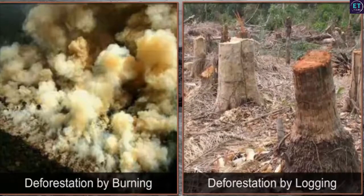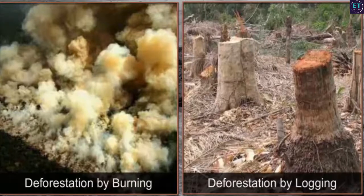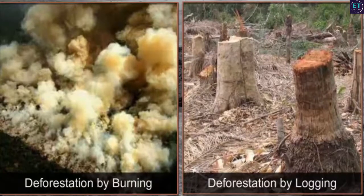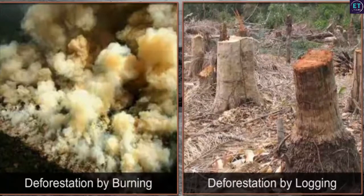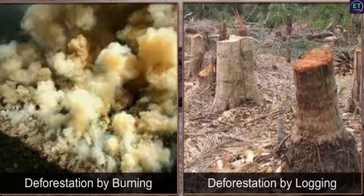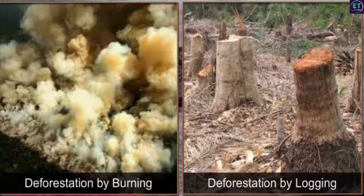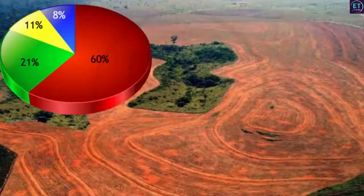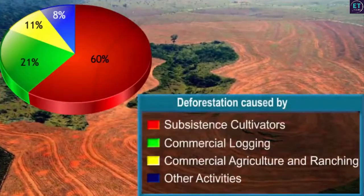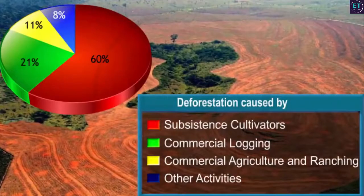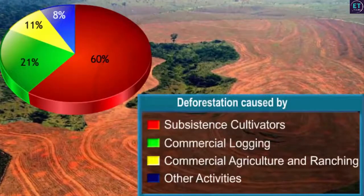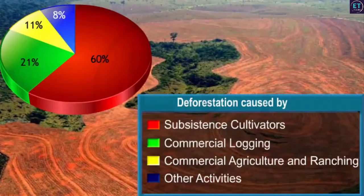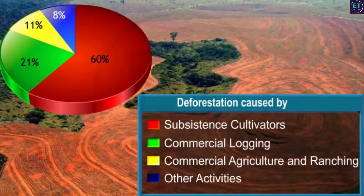Deforestation started many hundreds of years ago. As population increased and the demand for food rose, land had to be cleared for cultivation, settlement and pasture. This was the start of deforestation.